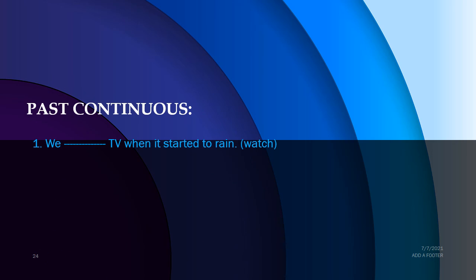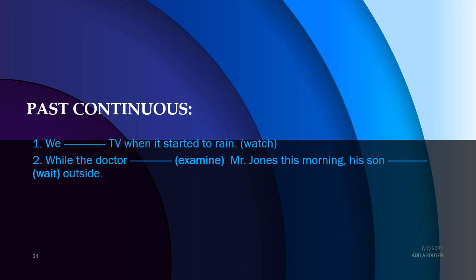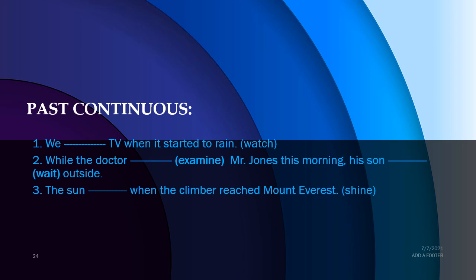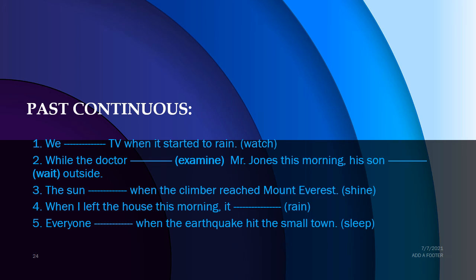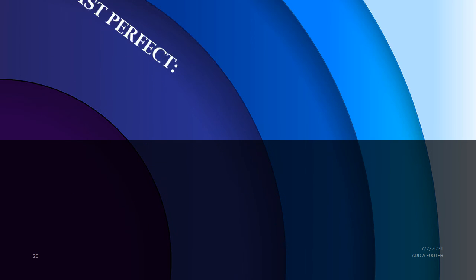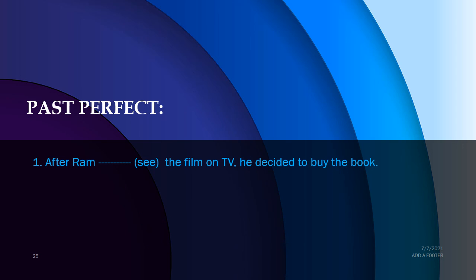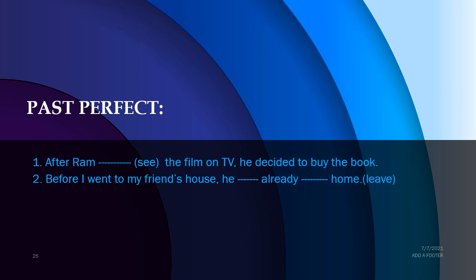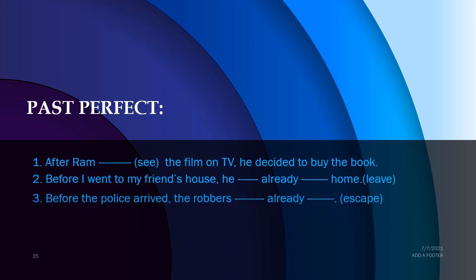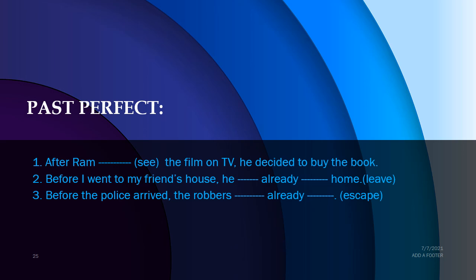More past continuous examples: 'While the teacher was examining Mr. Jones this morning, his son was waiting outside.' 'The sun was shining when the climber reached Mount Everest.' 'When I left the house this morning it was raining.' 'Everyone was sleeping when the earthquake hit the small town.' Past perfect: 'After Ram had seen the film on TV, he decided to buy the book.' 'Before I went to my friend's house, he had already left home.' 'Before the police arrived, the robbers had already escaped.'